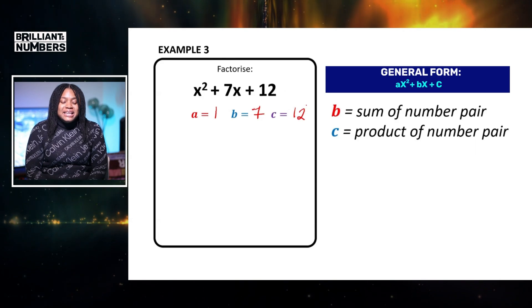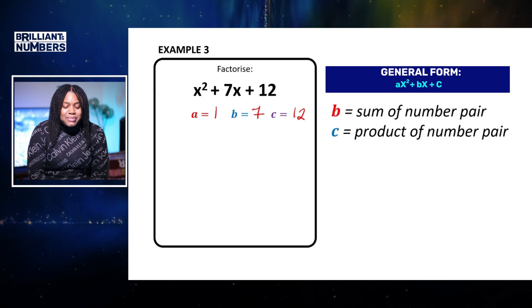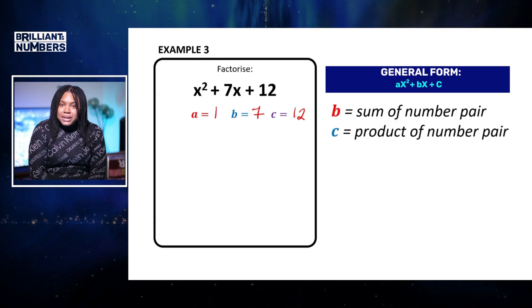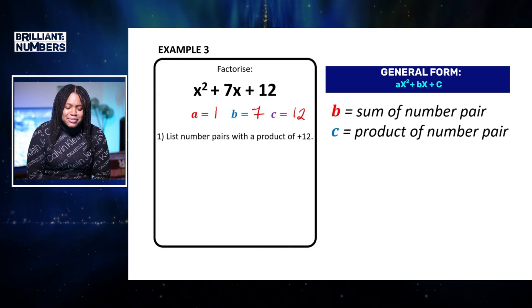Remember, I need my factor pair. My pair should multiply to give me 12, which is my c term, and they should also add to give me my b term, which is 7. So let's go ahead and list our factor pair.